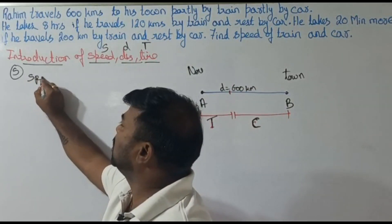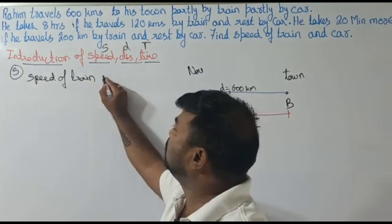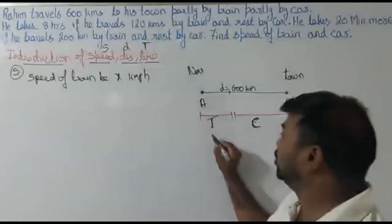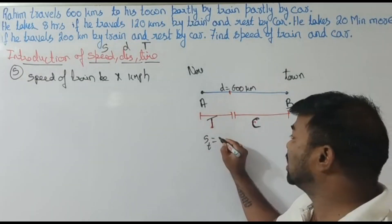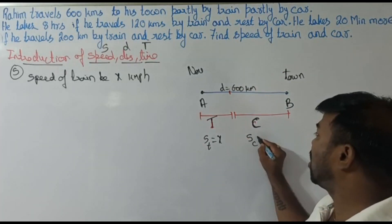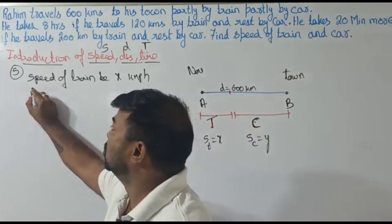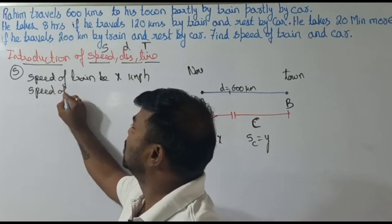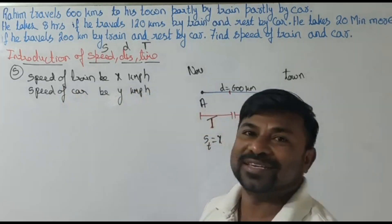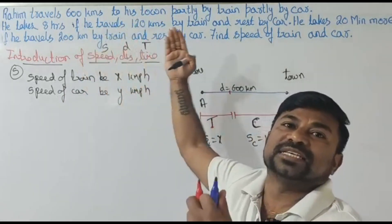Speed of the train: since we don't know it, let it be x kilometers per hour. Speed of the car: let it be y kilometers per hour. So introduction of speed is completed — x km/hr for train and y km/hr for car.